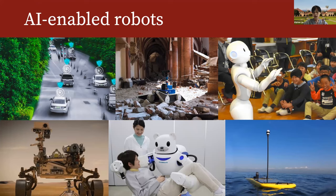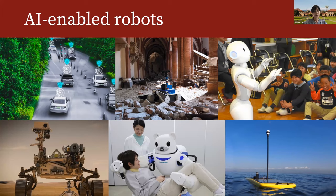Today I'm going to talk about the new role of physics simulation in AI. Physics simulation has always been a good friend to scientists and engineers, but its importance has been drastically elevated in recent years due to the rise of deep learning. It all starts with this desire to build AI-enabled robots that operate in dynamic and unstructured environments and even interact with humans.